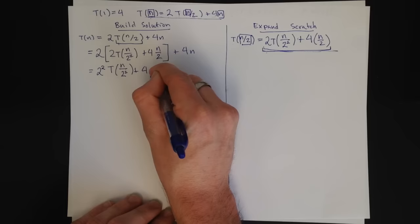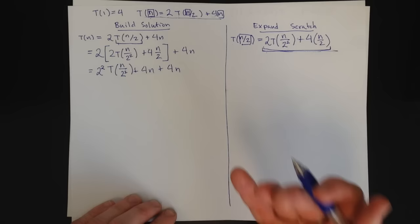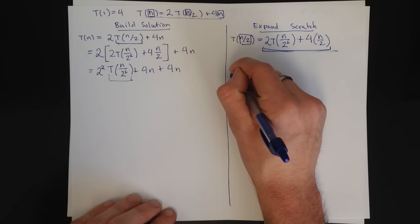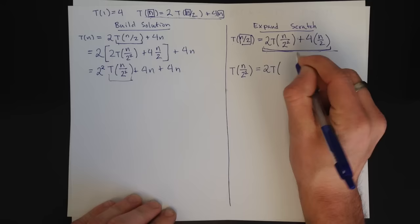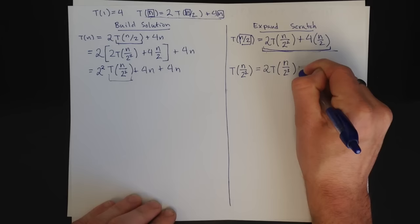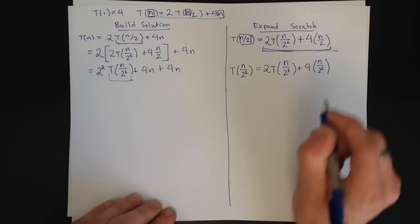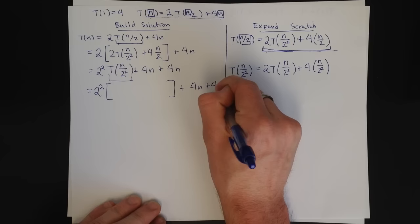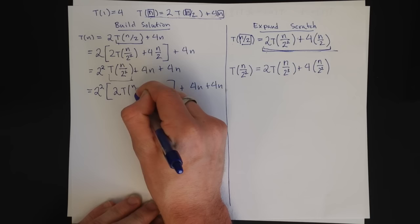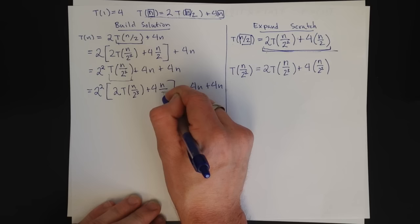All right. Now, what can we do? The only thing we can do is expand. That's the only thing we know how to do here. So we're going to expand again. This time we're expanding T(n/2²). Plugging in n/2² for n gives us 2T. And n/2² divided by 2 is n/2³ plus 4n/2². And now I need to plug this back in. This is plug and chug. 2² times create a big block plus the 4n plus the 4n. So I'm just coming down. Put this inside: T(n/2³) plus 4n/2².